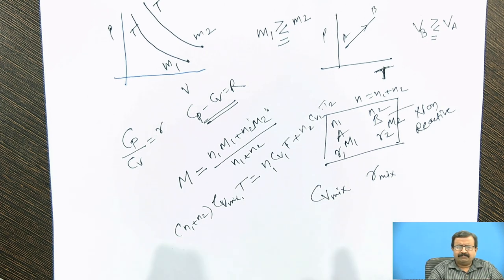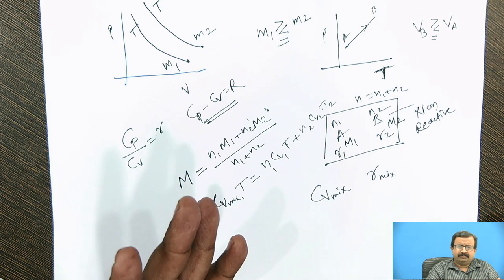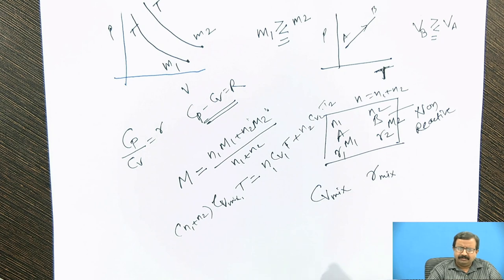Now one thing I forgot to tell you about the first law that we have already derived: it is the conservation of energy principle. Because whatever heat we have supplied, we have tried to find out where it has gone. It has gone in expanding the medium and also in changing the internal energy. But first law is not a complete law for understanding thermodynamics because it never states anything about whether the process is possible or not.